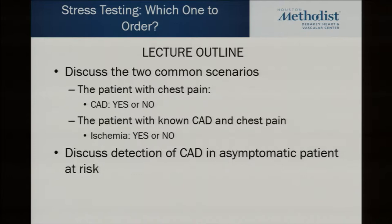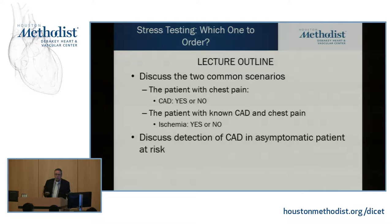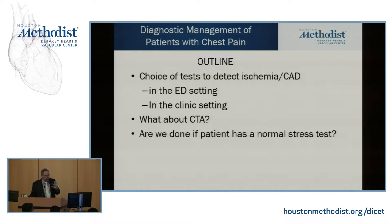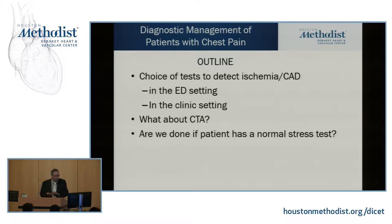The second scenario is the patient who already has CAD. That one is tougher, because we know they have chronic disease. Now they come in with chest pain and you wonder: is this non-cardiac pain, or are they really having ischemia? We're also going to talk a little about the asymptomatic patient with CAD, and touch on coronary CTA, and what we do if the patient has a normal stress test — are we done?